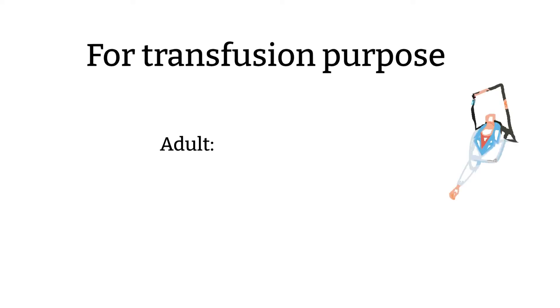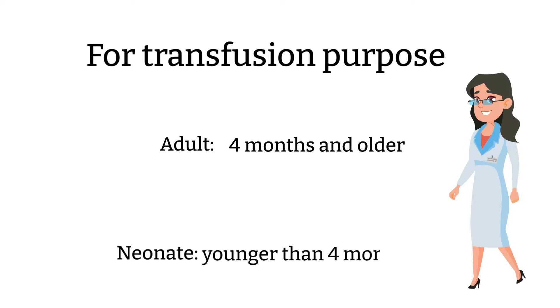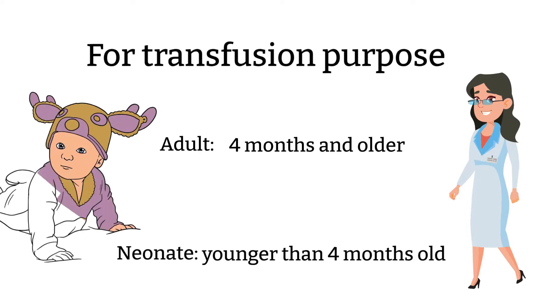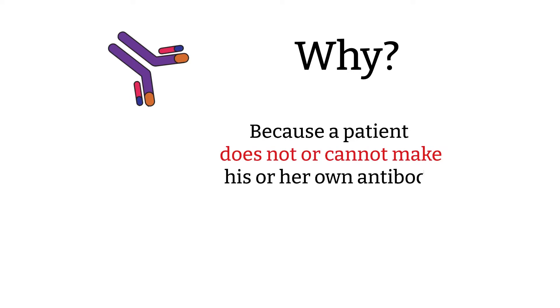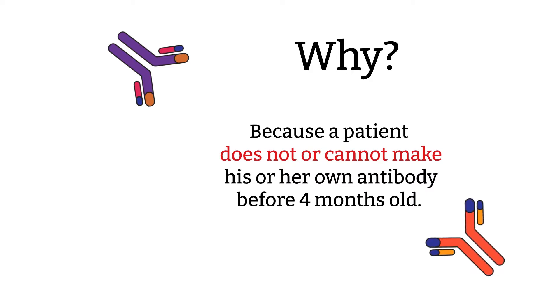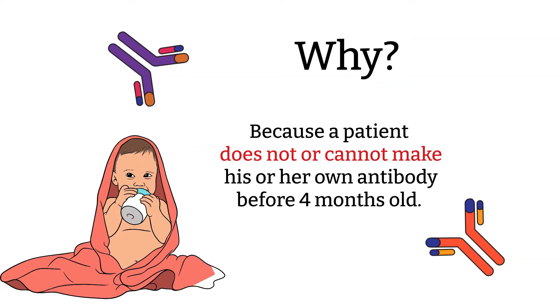First, let's define the adult and neonate age group. Adult patients are not defined at 18 years and older as most of us are familiar with in our day-to-day life if you live in the United States. In blood bank, the patient is treated as adult when the patient is 4 months and older. This is for transfusion purposes. It is because the patient does not or cannot make his or her own antibody before the age of 4 months. The patients may have transient antibodies from the mother, which should go away in a few months since the patient's immune system is not capable of producing his or her own antibody yet.